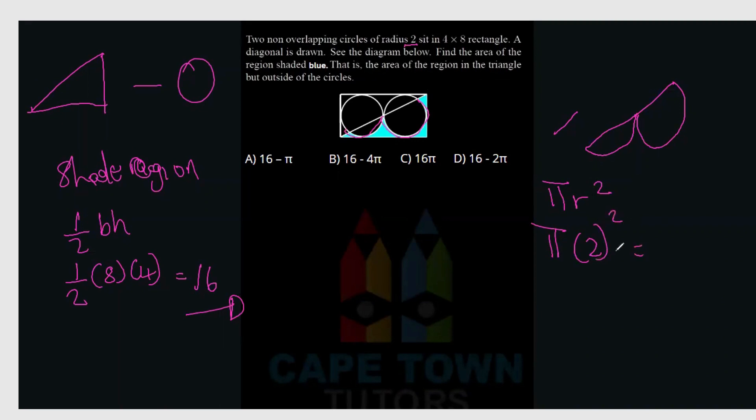And so to find the area of the shaded region, we'd have to say the 16 minus 4 pi. So 16 minus 4 pi is B. Alright cool. Hopefully that makes sense. It's much more similar to the first one that we did in this paper. So hopefully it makes sense. If you have any questions, please put them in the comment box below and I will try to get to them as soon as possible. Let's go into the next question. Thank you.